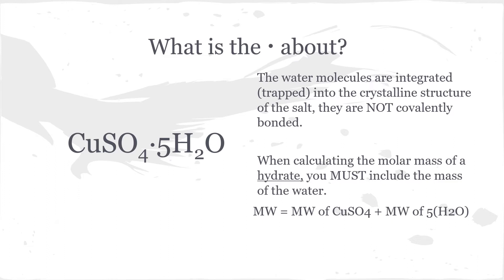This is super important to remember: when you want to find the molecular weight of your hydrate, you have to also include the mass of the water since it's incorporated in that structure. When looking at the molecular weight of copper sulfate pentahydrate, you first calculate the molecular weight of copper sulfate, and then you add on the molecular weight of five water molecules. Definitely remember that when calculating your moles and everything else for copper sulfate pentahydrate.